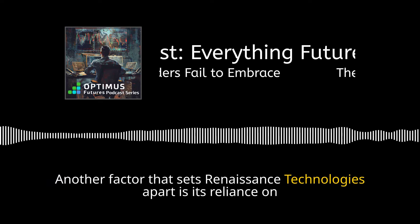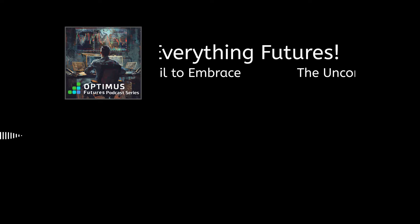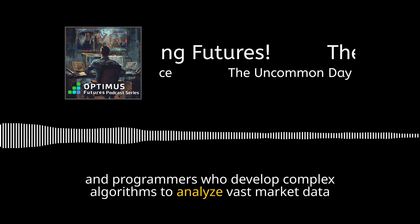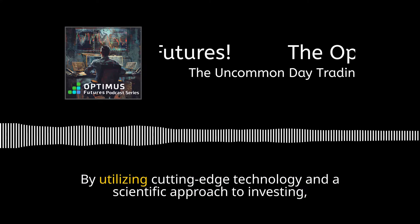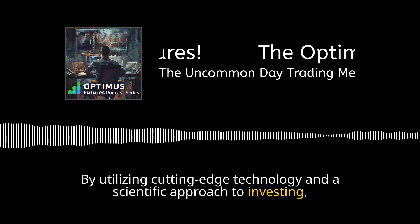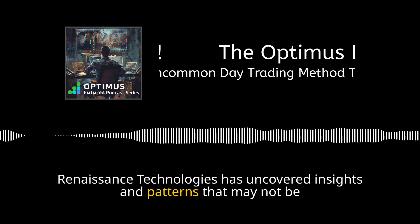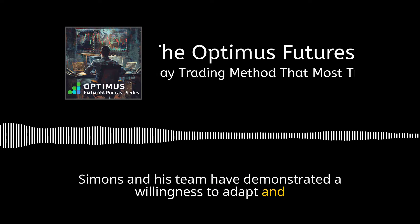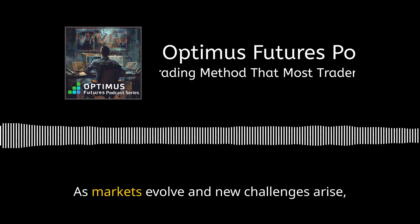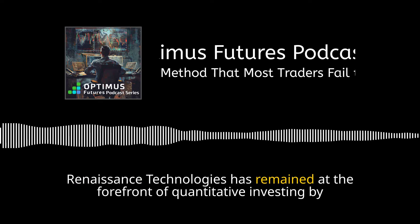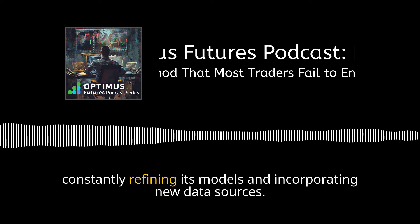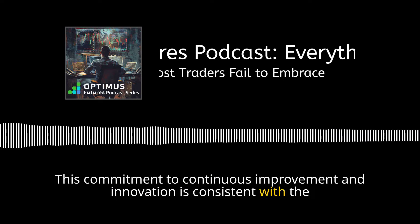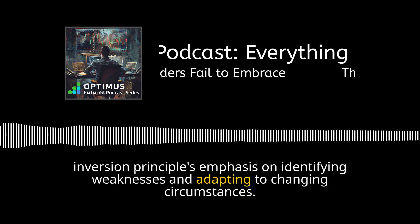Another factor that sets Renaissance Technologies apart is its reliance on data-driven decision-making. The fund employs a team of top-tier mathematicians, scientists, and programmers who develop complex algorithms to analyze vast market data and identify profitable trading opportunities. By utilizing cutting-edge technology and a scientific approach to investing, Renaissance Technologies has uncovered insights and patterns that may not be apparent to traditional traders. Furthermore, Simons and his team have demonstrated a willingness to adapt and improve their strategies continually, remaining at the forefront of quantitative investing by constantly refining models and incorporating new data sources.